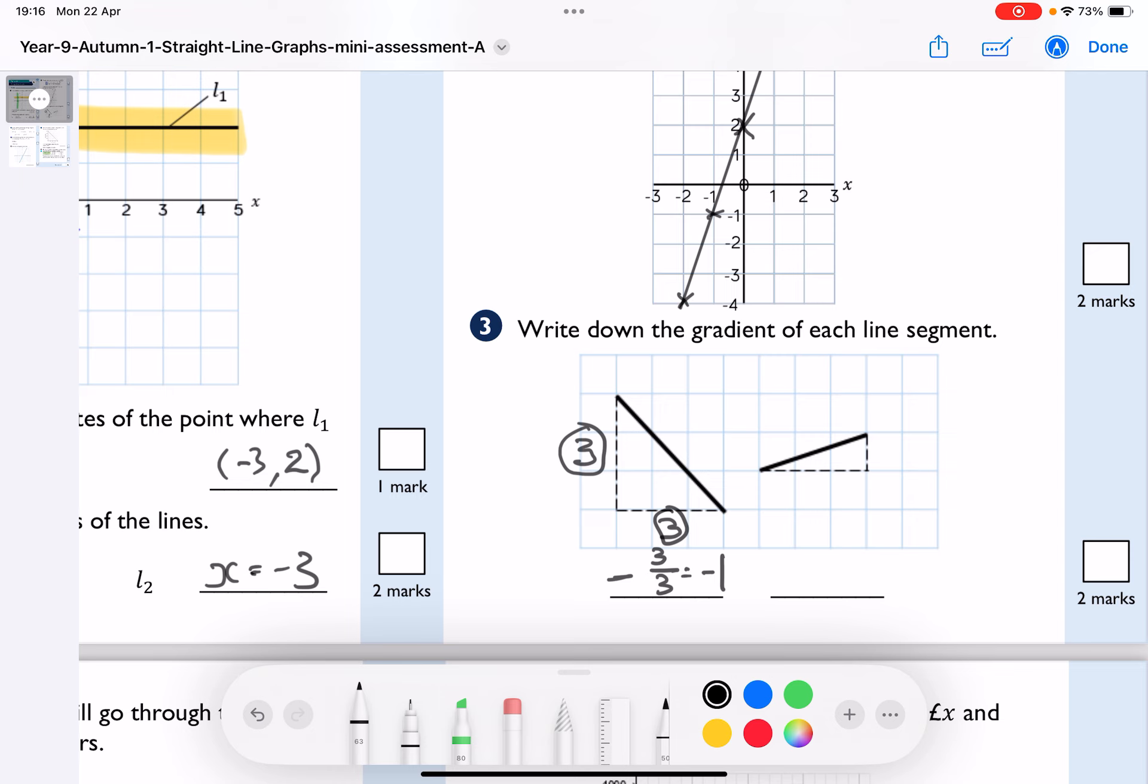With the one on the right, I can see it's a positive gradient. It is going up by 1 and across by 3. So the gradient is 1 over 3, which is a third. So remember, it's the y value divided by the x value when you have them like this.